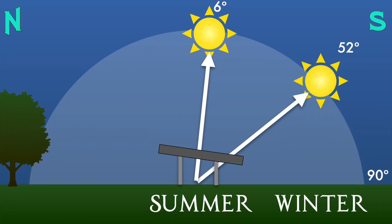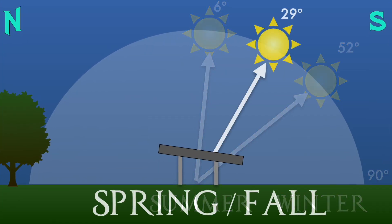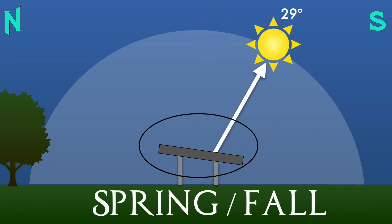Now it's usually suggested that you aim your panels to the halfway point between the summer and the winter angle and in my case that would be around 29 degrees. So what would happen if I change the angle of my panels?